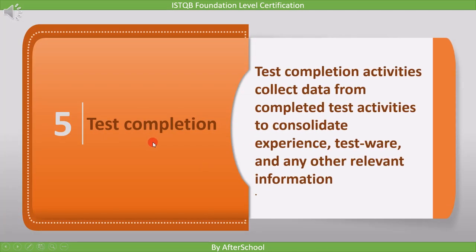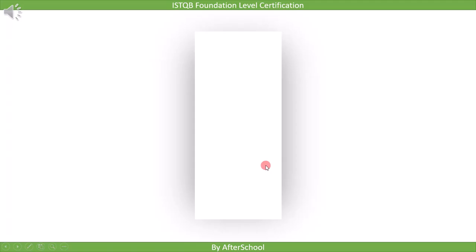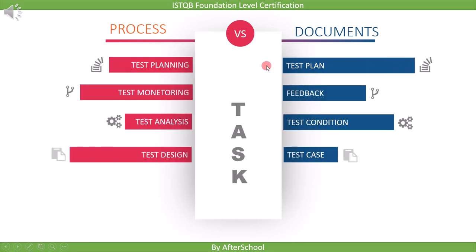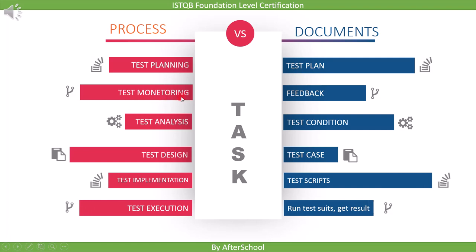The last activity of the test process is test completion. Test completion activities collect data from completed test activities to consolidate experience, testware, and any other relevant information. This is where we collect all the outputs from previous activities: test planning produces the test plan, test monitoring produces feedback, test analysis produces test conditions, test design produces test cases, test implementation produces test scripts, and test execution produces test results.